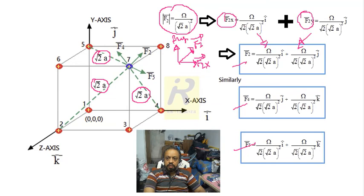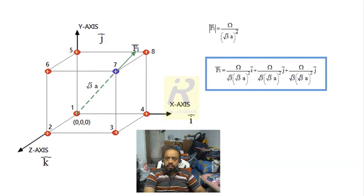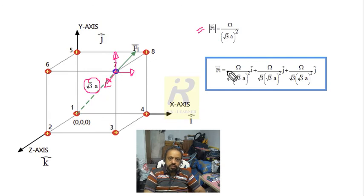Now we find the force on charge #7 due to charge #1. Be careful here: the distance from charge #1 to charge #7 is √3·a, the body diagonal. The force F₁ has magnitude ω/(√3·a)² and splits into three components along x, y, and z axes, giving F₁ in vector form as equal contributions along î, ĵ, and k̂.